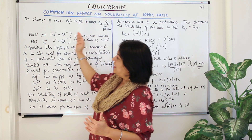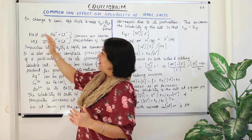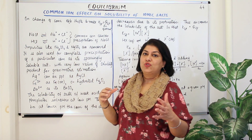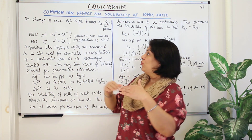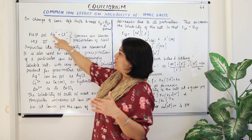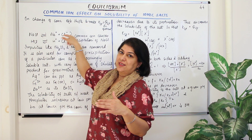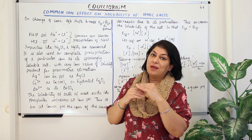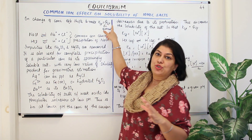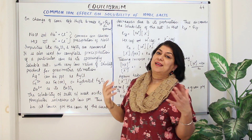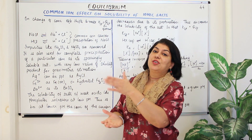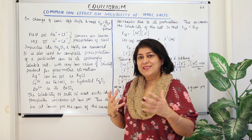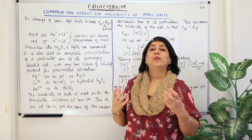The reaction starts proceeding in the opposite direction so that the excess chloride which is present is used up, and the ratio of the ions becomes the same. When it becomes the same, Ksp becomes equal to Qsp and a new equilibrium is established. This is the effect of a common ion.